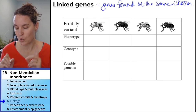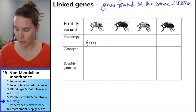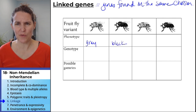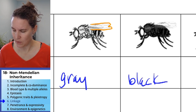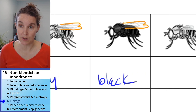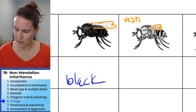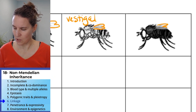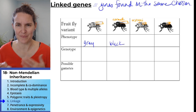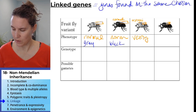Let's talk fruit fly phenotypes. We have two body phenotypes: gray and black. We also have two wing phenotypes. These flies have normal wings — that's what they're called. And then compare it to this: they call this a vestigial wing. So we have normal, normal, vestigial, vestigial.